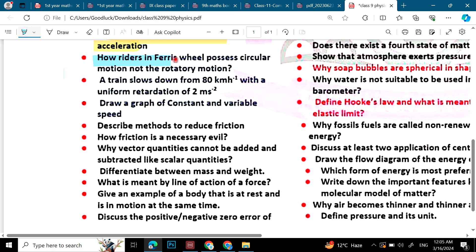How riders in a ferris wheel possess circular motion, not the rotatory motion. A train slows down from 80 km per hour with a uniform retardation of 20 meter per second square. Draw a graph of constant variable speed. Describe methods to reduce friction. How friction is necessary evil.